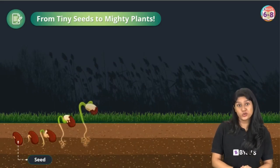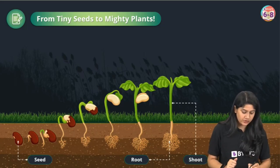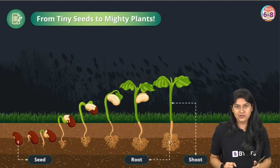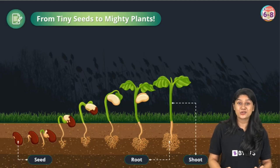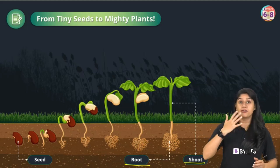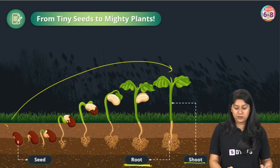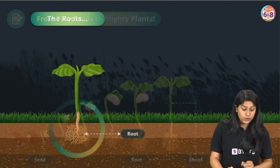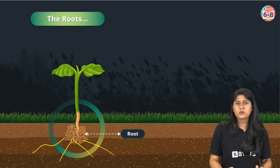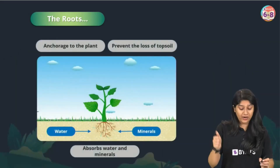When we talk about roots, we don't see them but they provide anchorage to the plant. As a plant grows from a seed, it has two important parts: the root and the shoot. The root is underground and the shoot, which is the stem, is above the ground. The root plays a very important role — it helps in the absorption of water and minerals from the soil and provides anchorage.